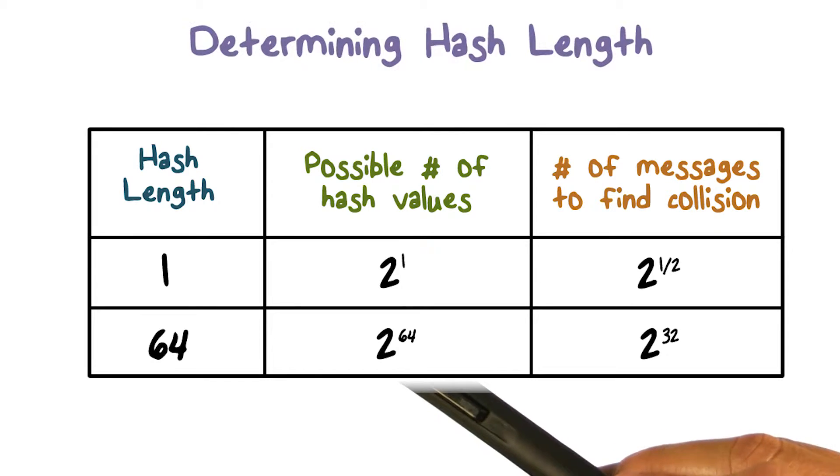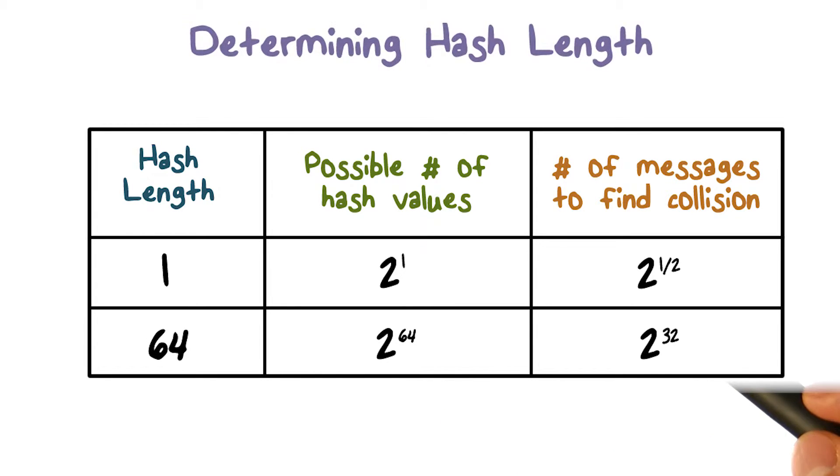Suppose the hash value has L bits. Then there are 2 to the L possible hash values. According to the birthday paradox, we can think of 2 to the L possible birthdays.